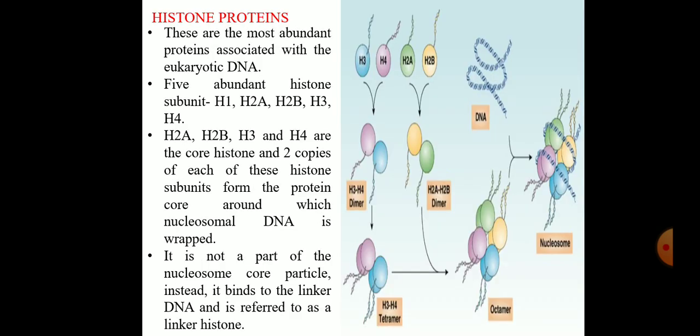The histone proteins: These are the most abundant proteins associated with the eukaryotic DNA. There are 5 abundant histone subunits: H1, H2A, H2B, H3 and H4.